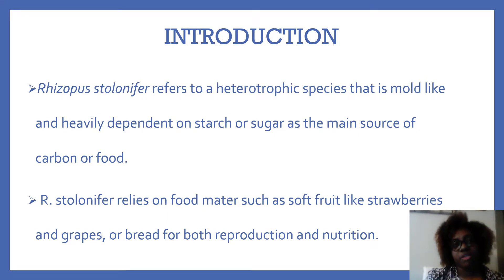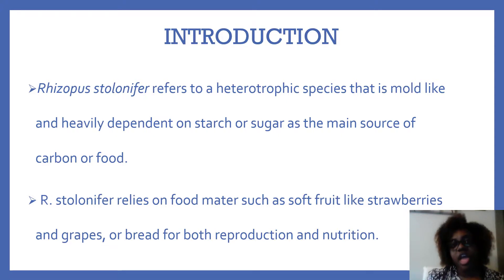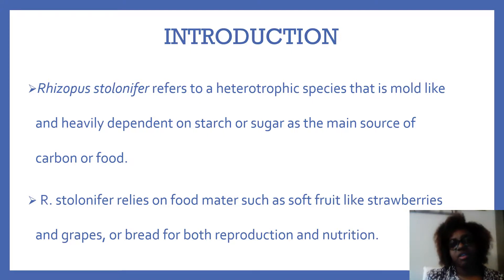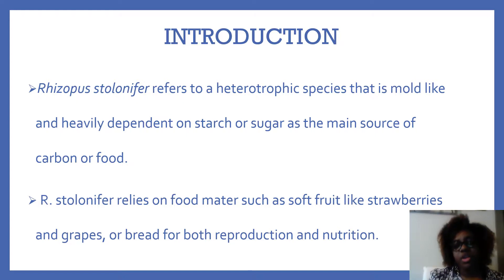Rhizopostolonyphor refers to a heterotrophic species that is mold-like and heavily dependent on starch or sugar as the main source of carbon or food. It relies on food matter such as soft fruit like strawberries and grapes, or bread, for both reproduction and nutrition.